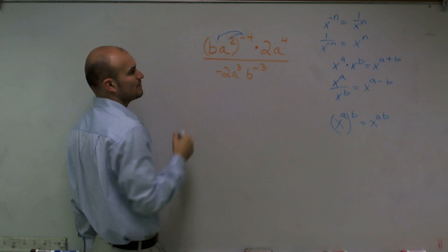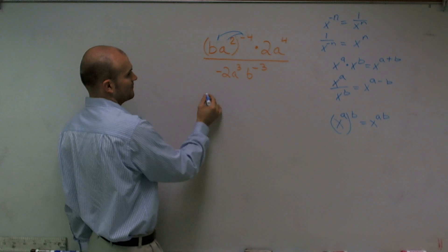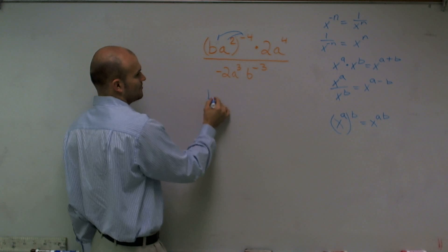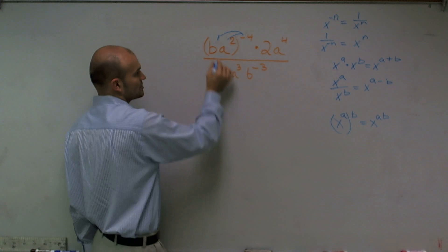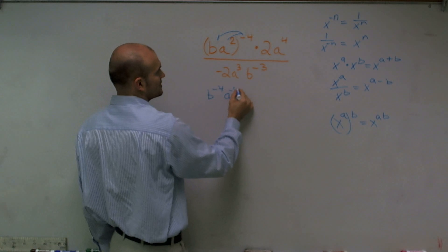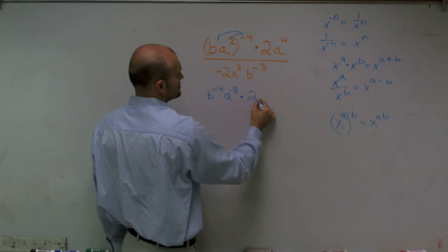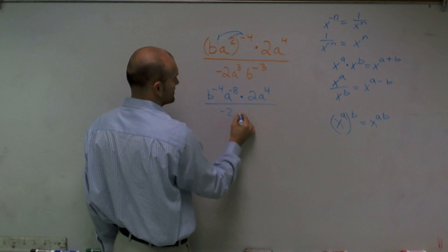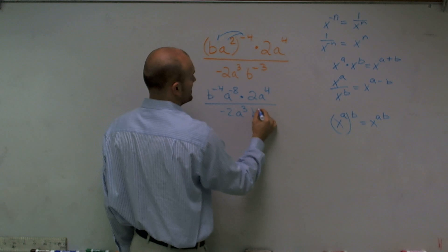Well, remember that b can be raised to the first power. So therefore, when actually multiplying this out, I'll have b to the negative fourth, because 1 times negative 4 is negative 4, and then a to the 2 times negative 4 is negative 8 times 2a to the fourth divided by negative 2a to the third b to the negative third.